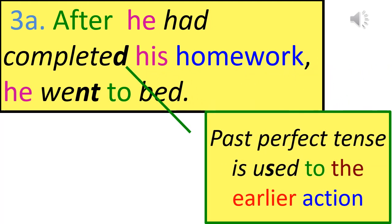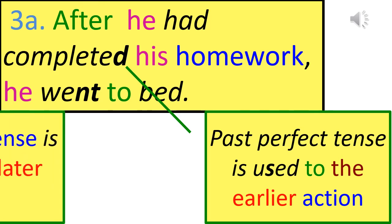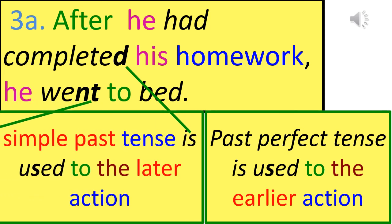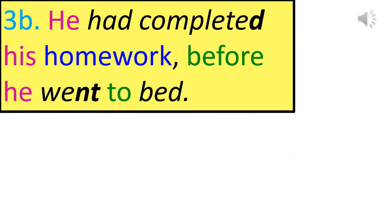Past Perfect Tense is used for the earlier action; Simple Past Tense is used for the later action. The action which occurred earlier is expressed in the Past Perfect Tense, whereas the action which occurred later is expressed in the Simple Past Tense. Answer: 'After he had completed his homework, he went to bed.'